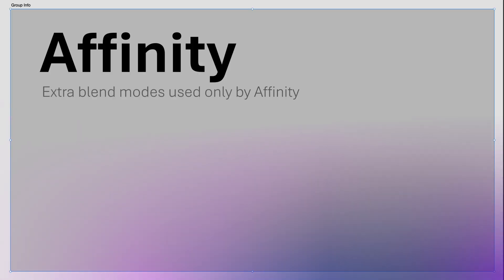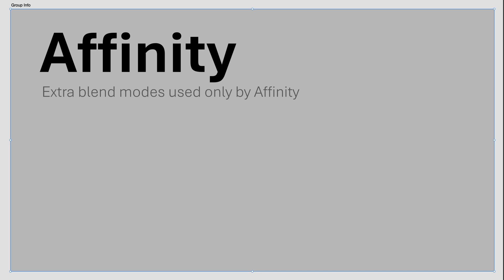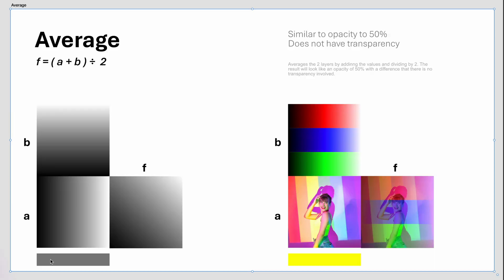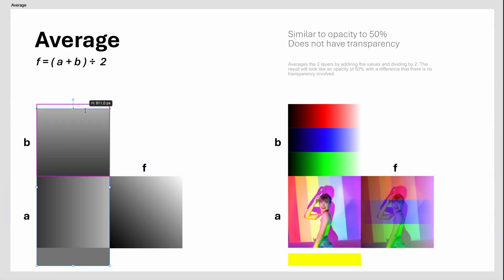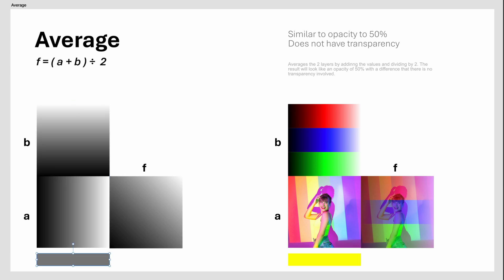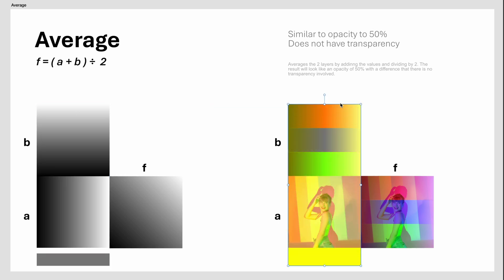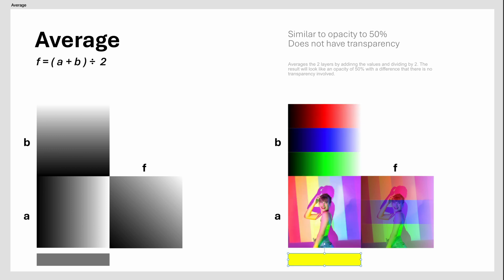The Affinity Group. These are less common blend modes available in Affinity. The Average Blend Mode averages the active layer with the underlying layer. When there is no transparency involved, the result will be the same as setting the opacity to 50%. Using the Average Blend Mode will not make the layer transparent.